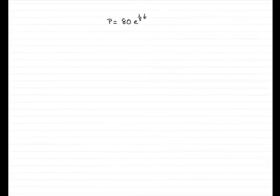Now for one mark we've got to write down the number of rabbits that were introduced to the island and that's going to be when t is equal to zero. So we've got p equals 80 e to the one fifth t, so when t equals zero,